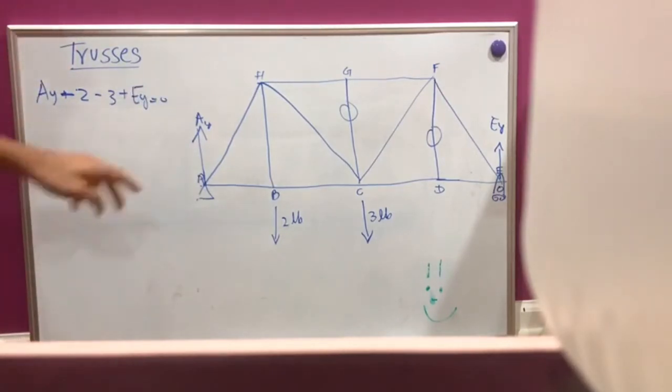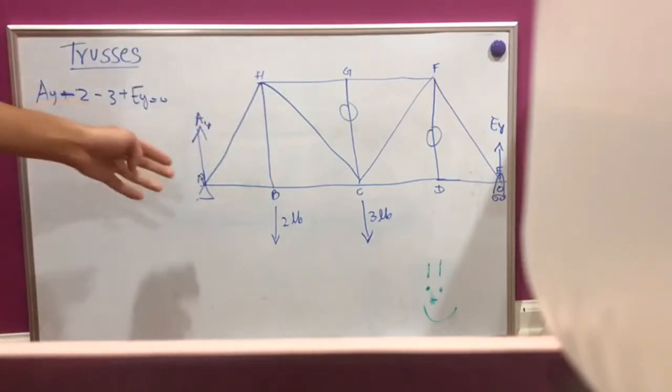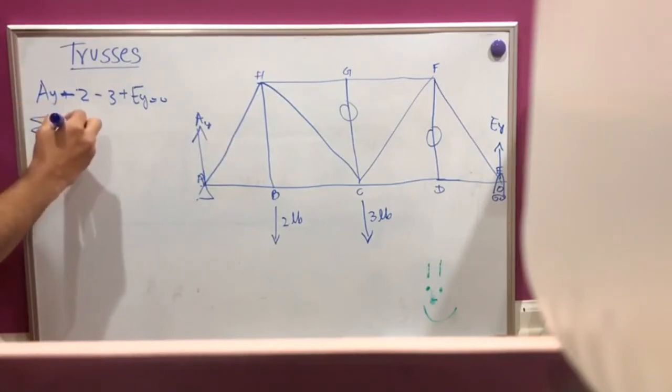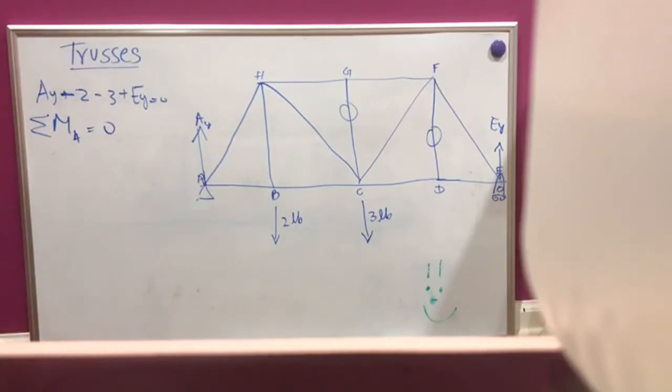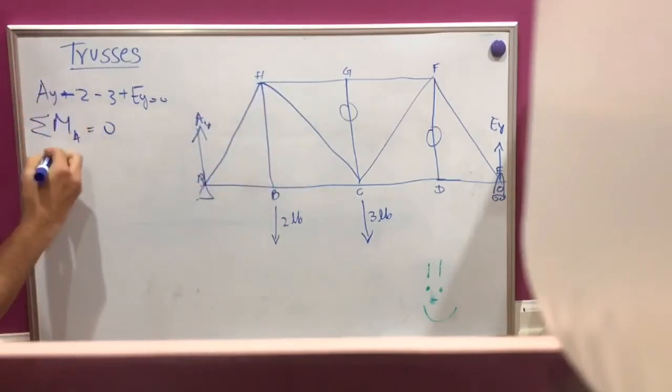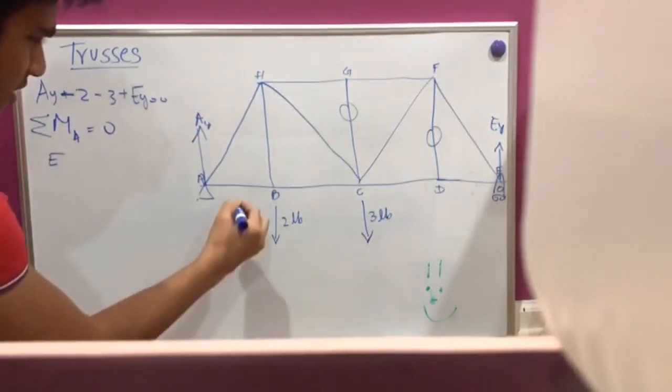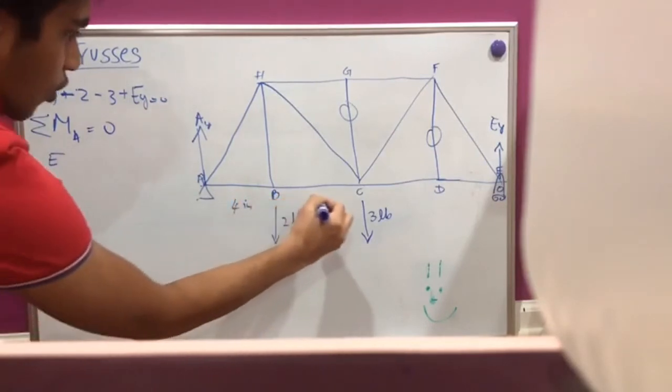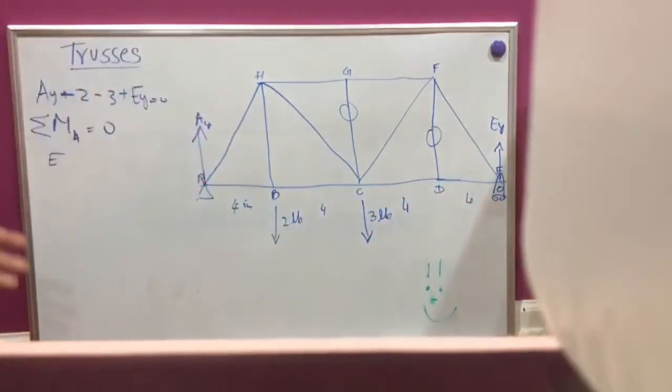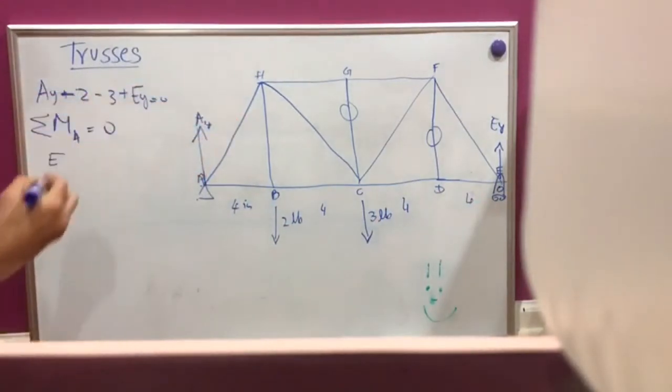So the goal is to find out AY and EY. And we can do that by taking the moment around A, and that has to be equal to zero because again, it's static. Now in this case, EY is going to be, okay, let's take this as four inches. All of them are four inches. And in that case, EY into 60...